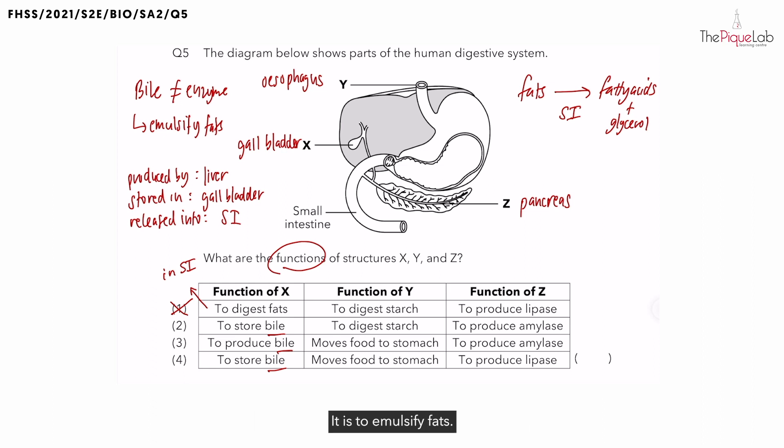It is to emulsify fats. So based on this info that I've just shared with you, what are the options that we can eliminate? We can actually eliminate option three. Because gallbladder does not produce bile. That happens in the liver. Gallbladder helps to store bile. So options two and four are still correct.